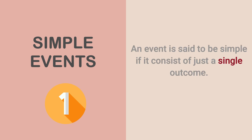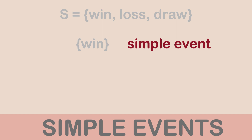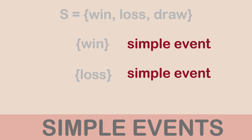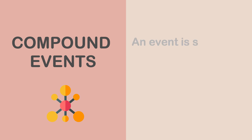The next type of event is the simple event. An event is said to be simple if it consists of just one outcome. Using the example of a football match, the sample space is win, loss, or draw. If I'm interested in just the event of win, loss, or draw individually, each of those is a simple event.